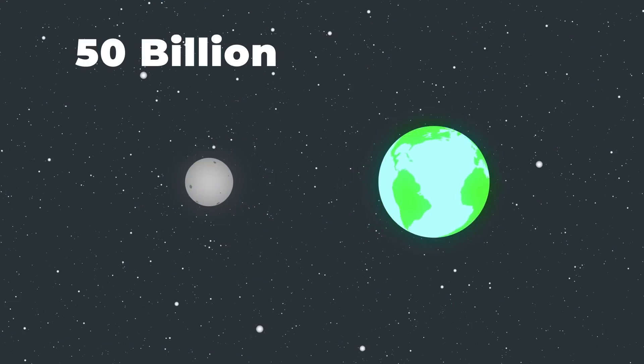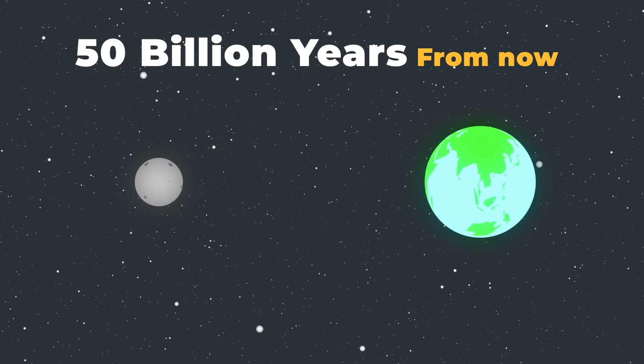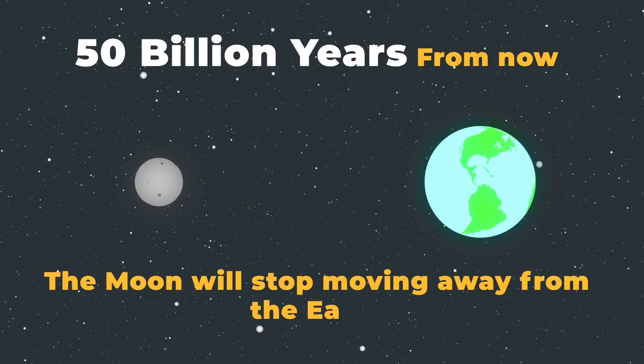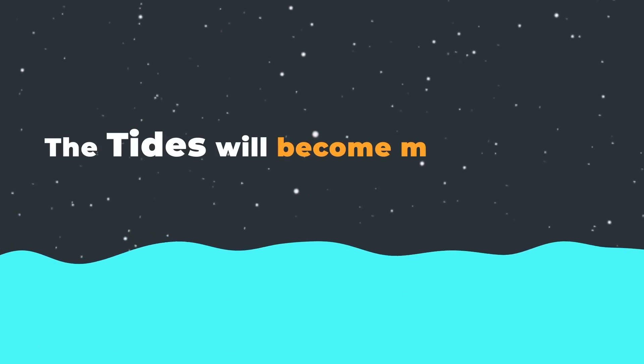50 billion years from now the moon will stop moving away from the earth and settle into a nice little orbit. And the tides will become much calmer.